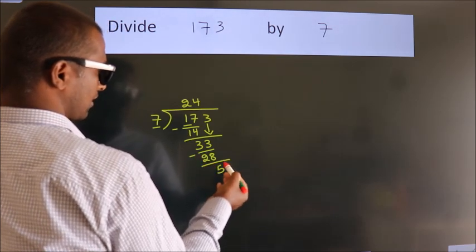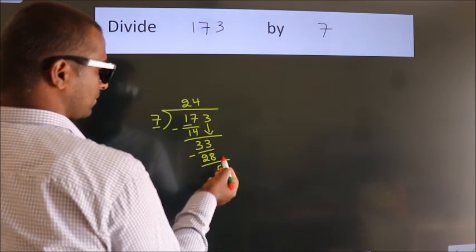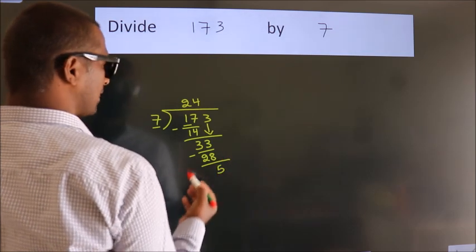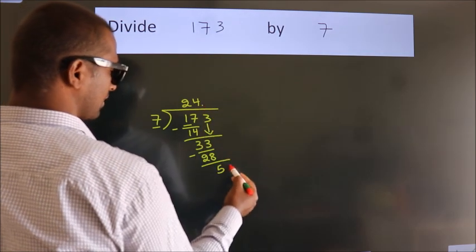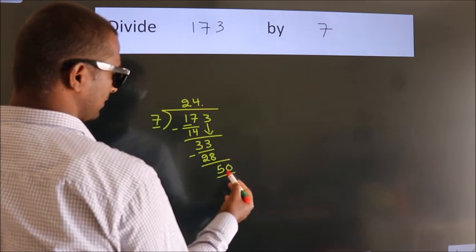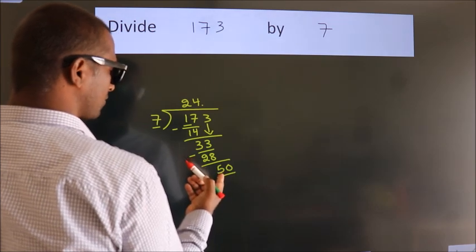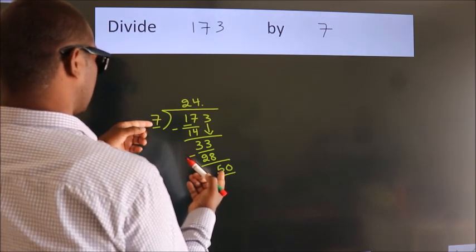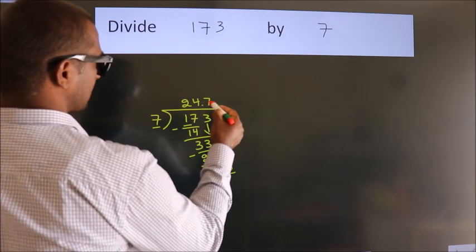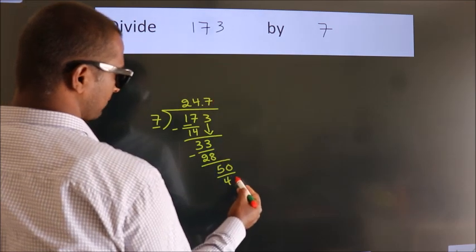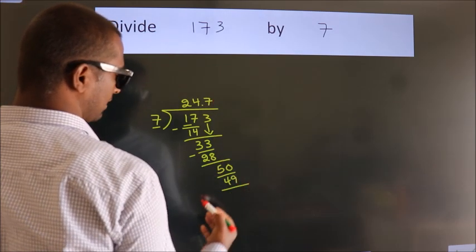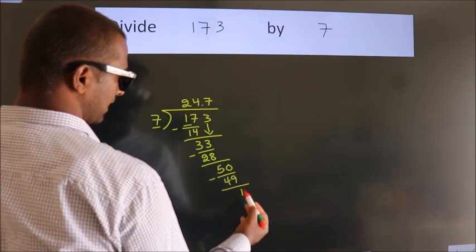After this, no more numbers to bring it down. So what we do is we put dot, take 0. So 50. A number close to 50 in the 7 table is 7 sevens, 49. Now we subtract. We get 1.